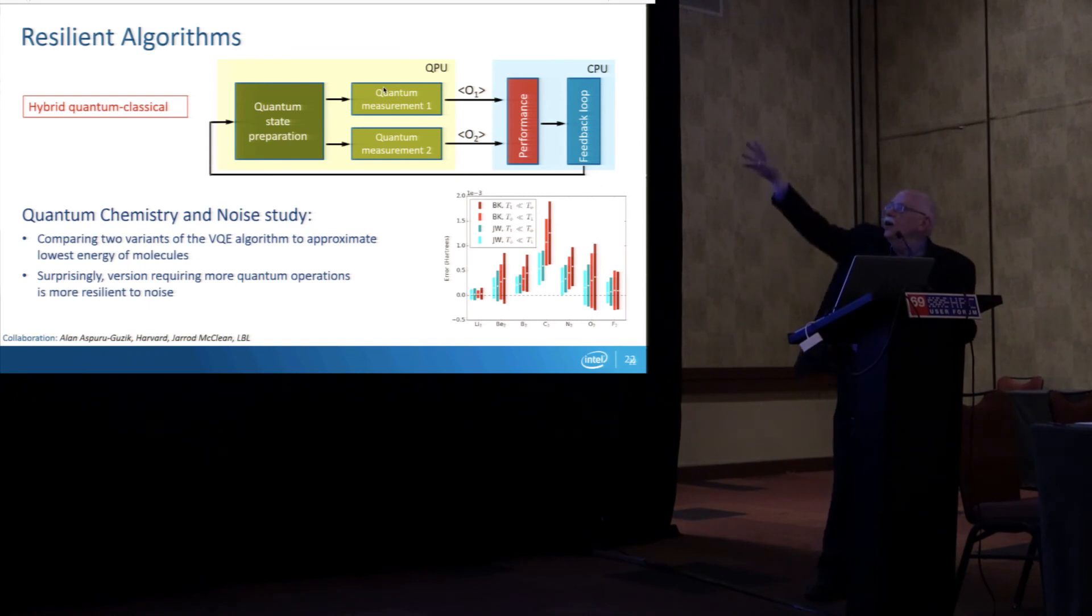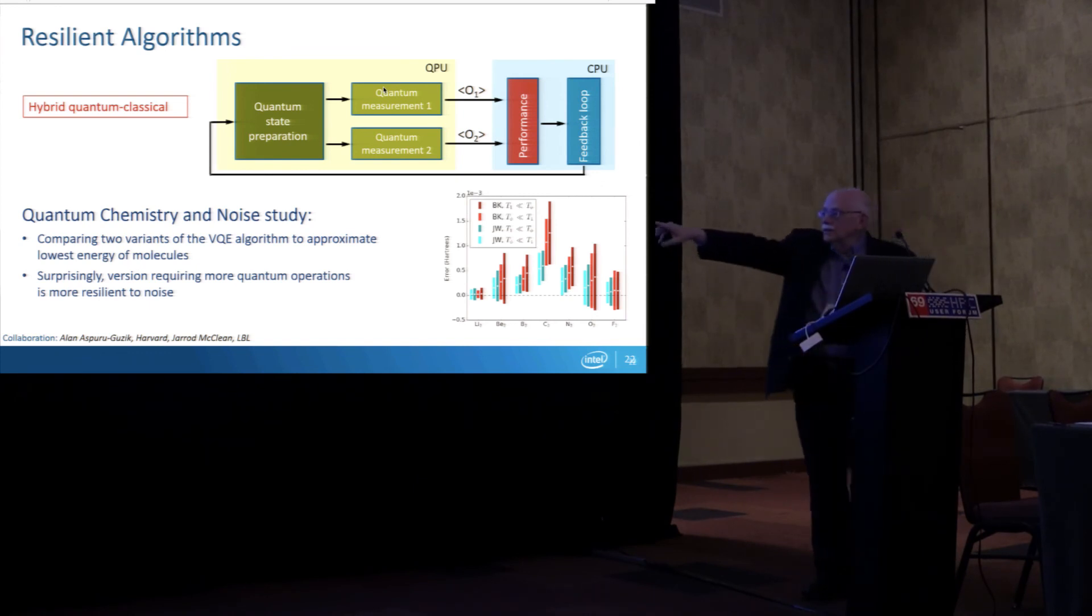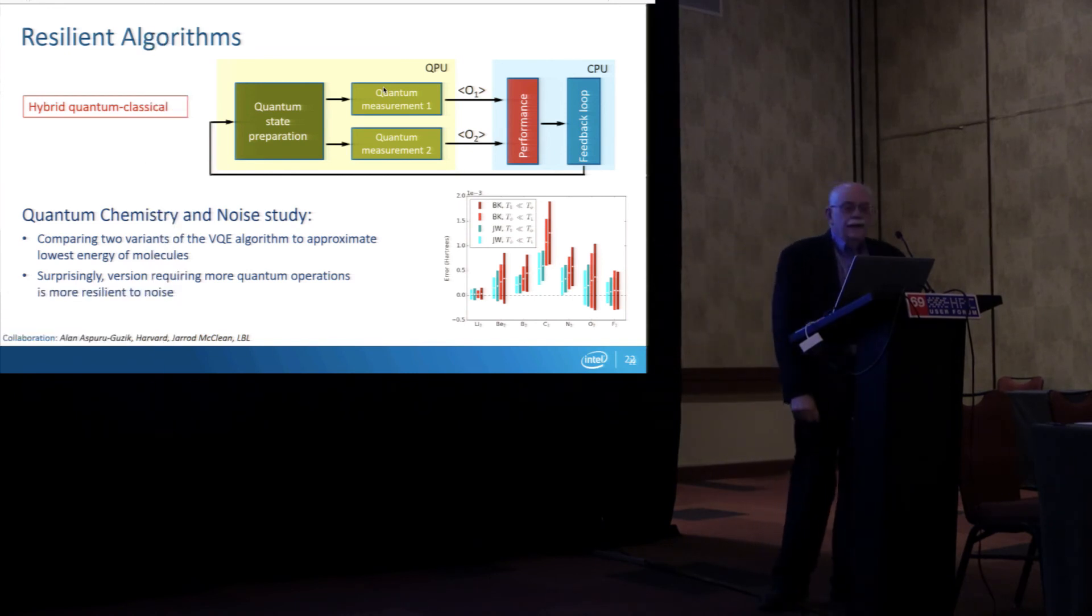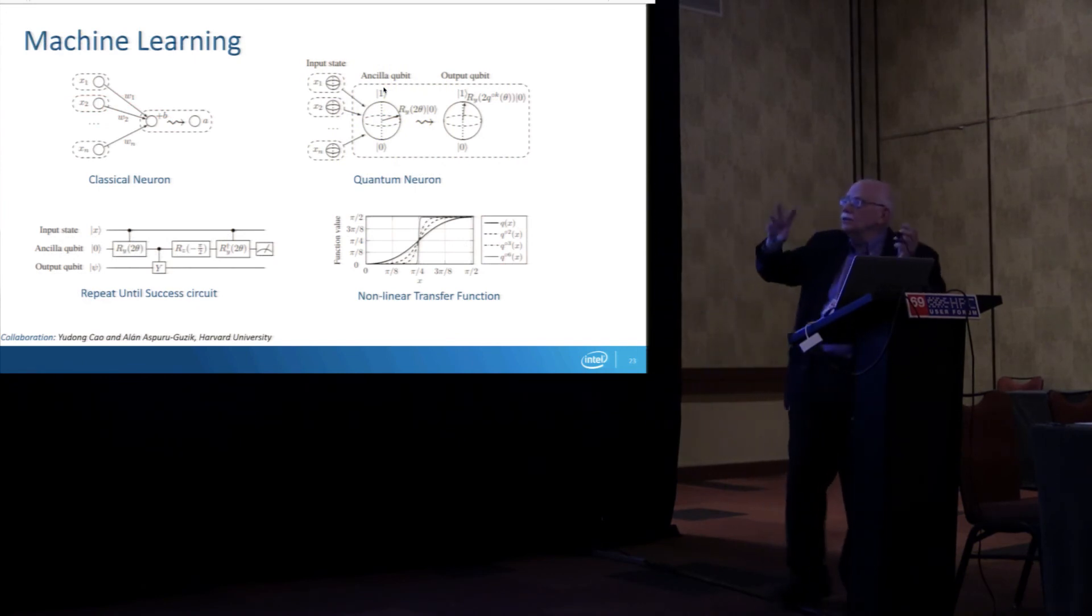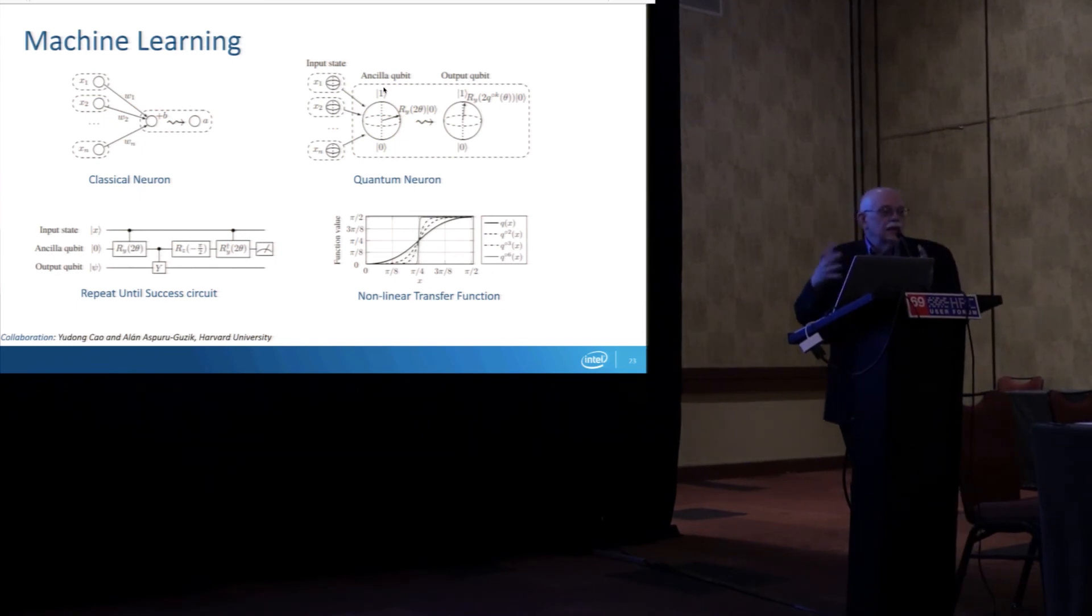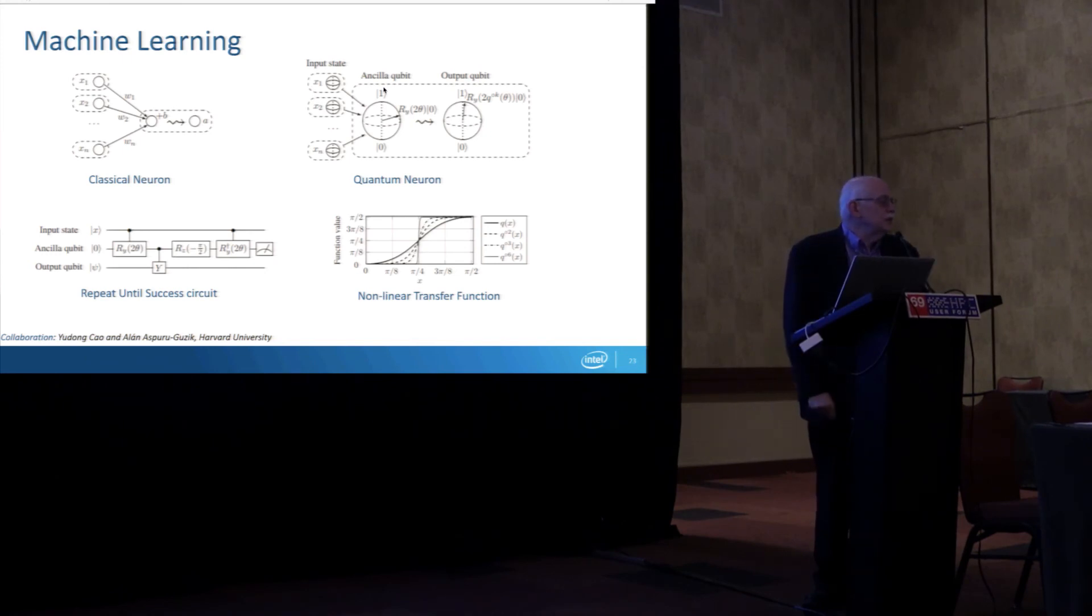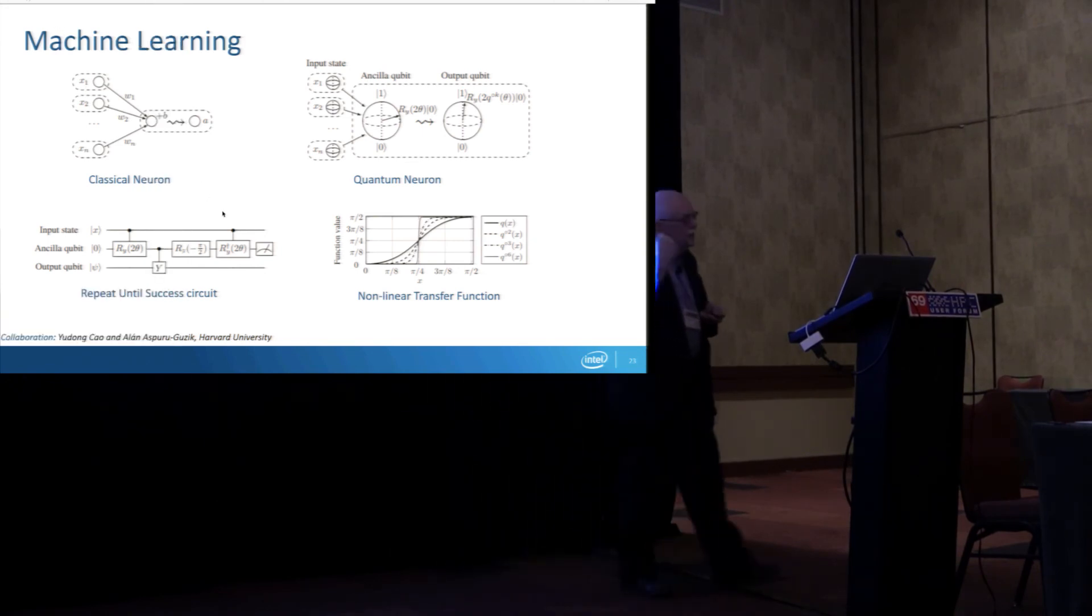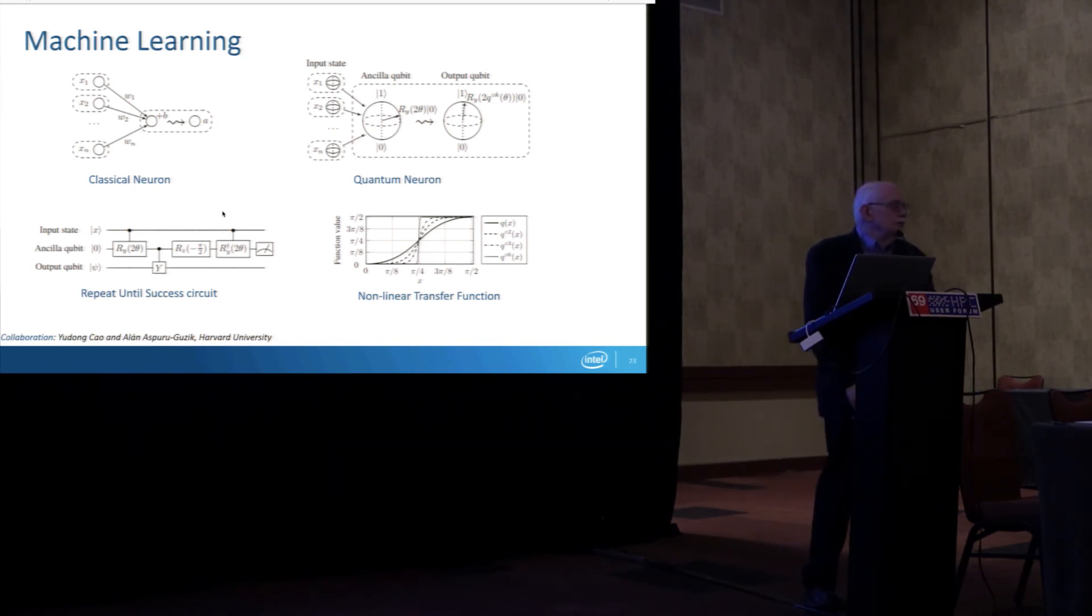In machine learning, we're doing several things including, again with Harvard, exploring how you might do a quantum neuron, a neuron concept to use in a neural network implementation, exploiting the parallelism of a quantum computer. The challenge there was to come up with a repeat until success circuit that would create a non-linear transfer function, a sigmoid that's needed for neural networks but isn't natural to the quantum system, which is linear.